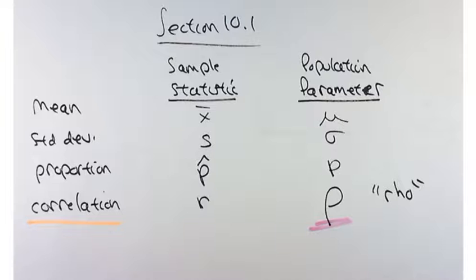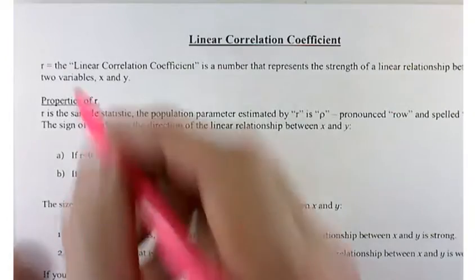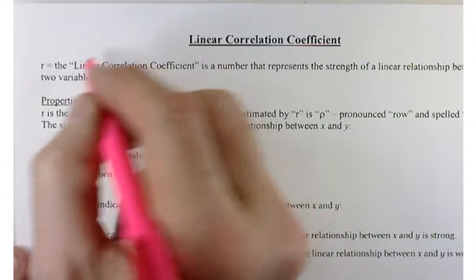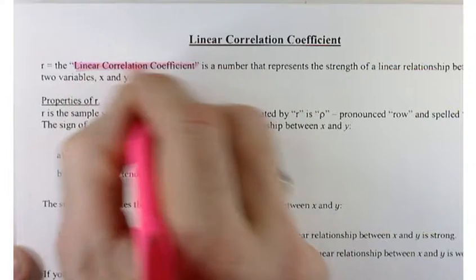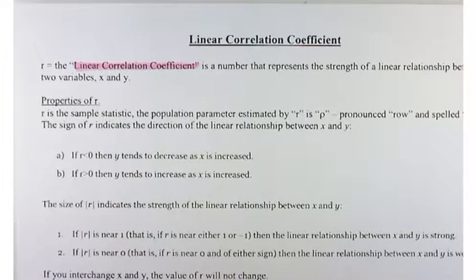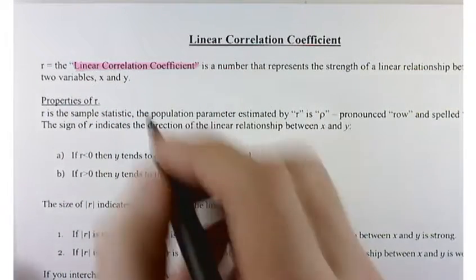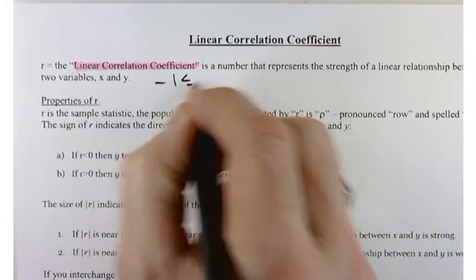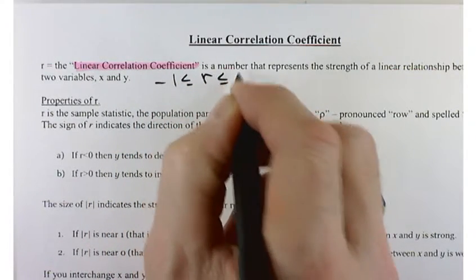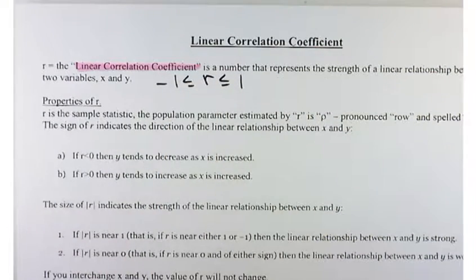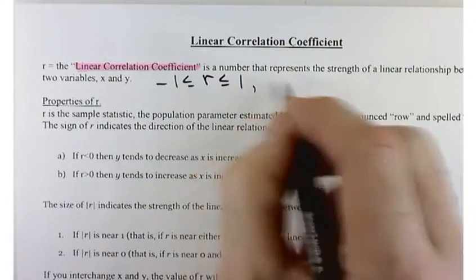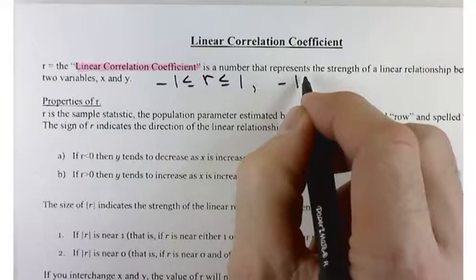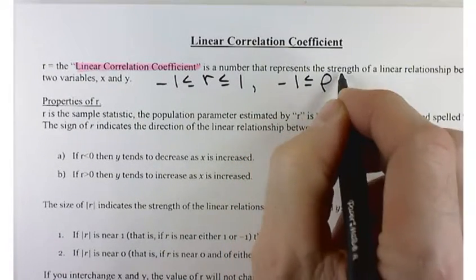So let's understand a few things about R. We've got a handout. R is what's called the linear correlation coefficient, and the value of R is somewhere between 1 and negative 1: negative 1 ≤ R ≤ 1. This is your sample statistic, but the same holds true for the population parameter: negative 1 ≤ rho ≤ 1.